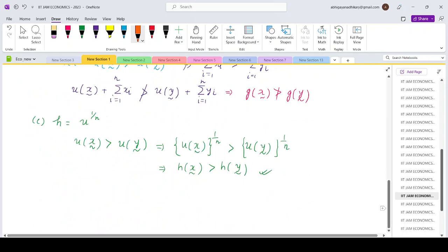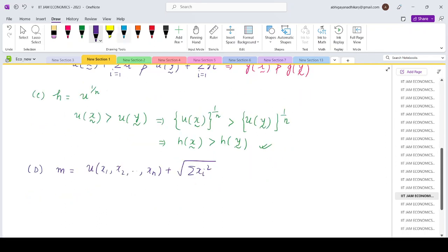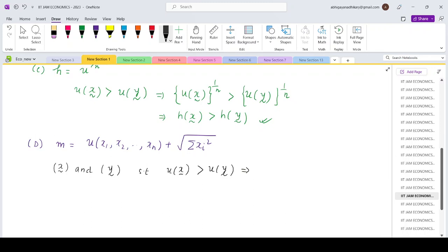Now comes option D. M is basically U of X1, X2, Xn plus square root of summation Xi square. Now again by a similar logic that we applied for option B, if we consider two bundles X and Y such that utility from bundle X is greater than utility of bundle Y, then it does not necessarily mean that summation Xi square will be greater than summation Yi square.